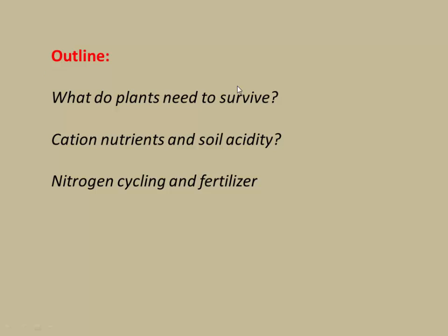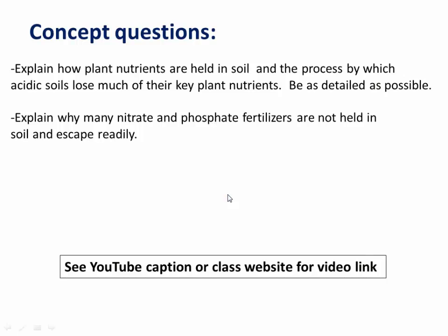In summary, we looked at what plants need to survive and how they provide us with food. We looked at how cation nutrients are held in soil and the effects of soil acidity on flushing out those cations. Then we looked at nitrogen cycling and the need for fertilizer. You can find the quiz link below this YouTube video.